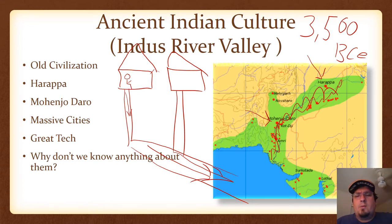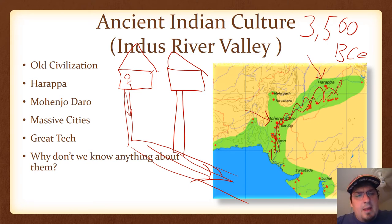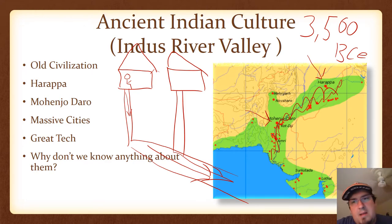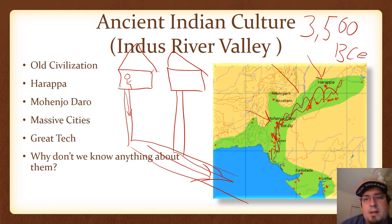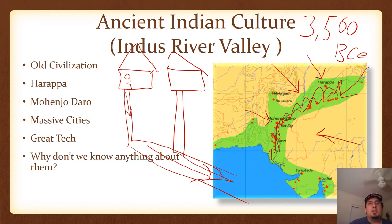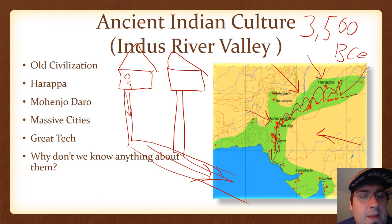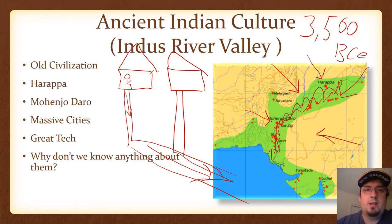That's really all you need to know about them — technologically advanced, but we don't know much because there's no Rosetta Stone equivalent. We also don't know how they disappeared. It could have been natural disaster, famine, colossal flooding, or more likely outside invaders came in. If these people didn't have militaries, outside invaders from surrounding regions would have completely destroyed them. Now let's move on to the stuff that AP definitely asks about, and that we have a test on.